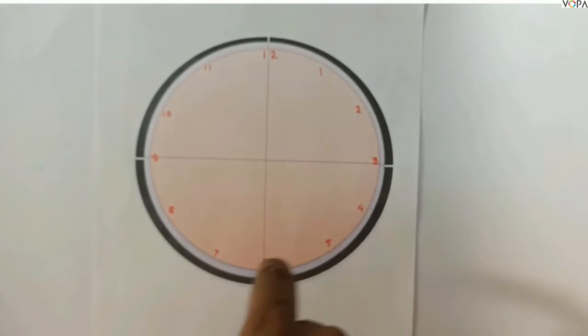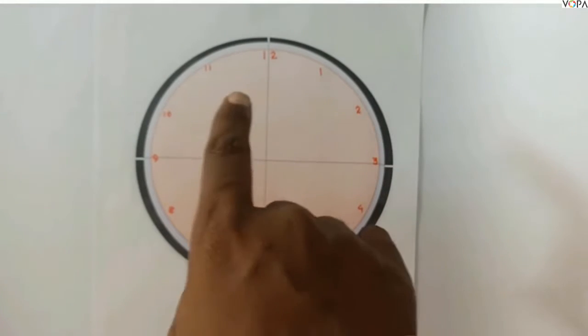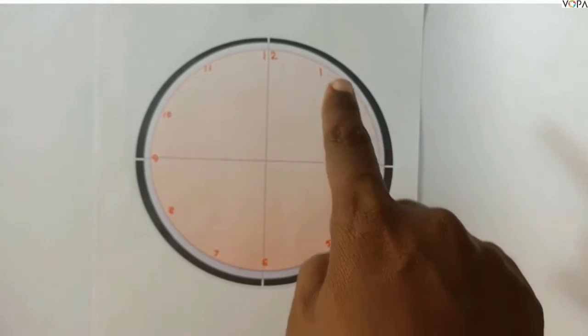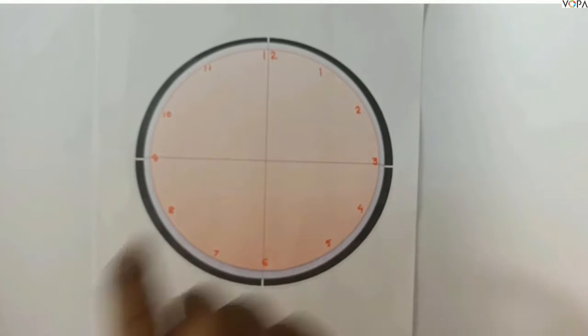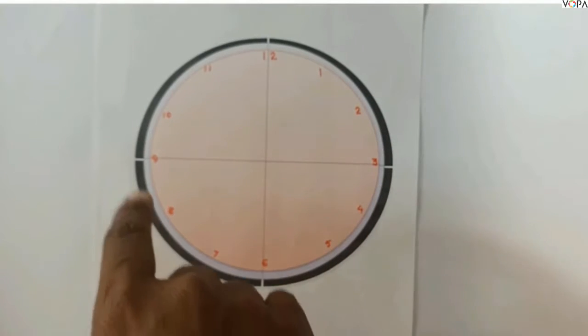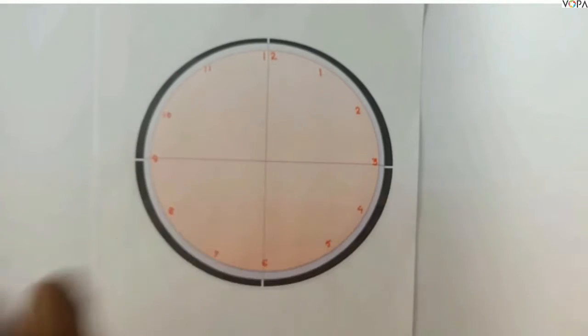See, this is the dial and we can see here the figures are indicated: 12, 1, 2, 3, 4, 5, 6, 7, 8, 9, 10, 11, and 12.